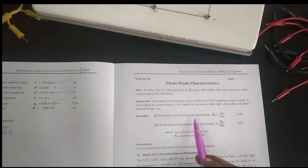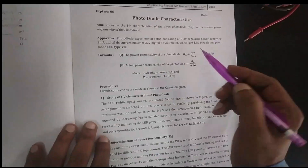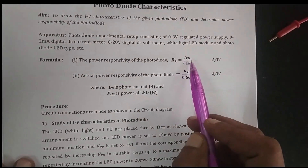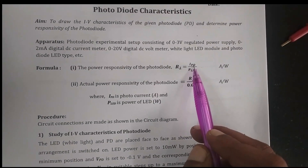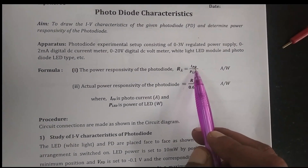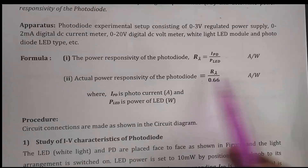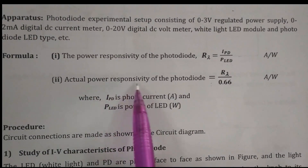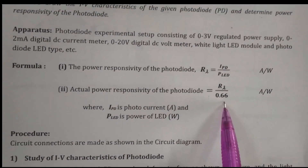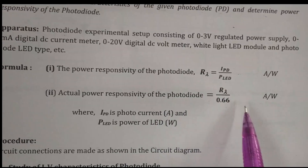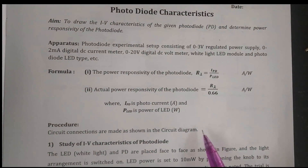The formula to calculate the power responsivity is: R_lambda equals I_PD divided by P_LED, where R_lambda is the power responsivity and P_LED is the power of the LED. The actual power responsivity is calculated using the formula R_lambda divided by 0.66.